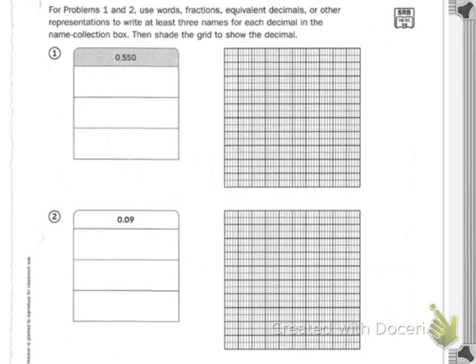It says, for problems one and two, use words, fractions, equivalent decimals, or other representations to write at least three names for each decimal in the name collection box. Then, shade the grid to show the decimals.